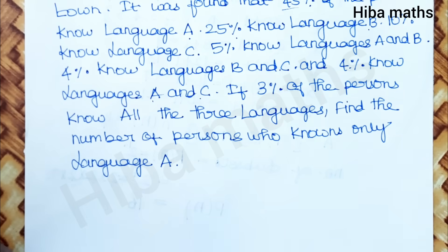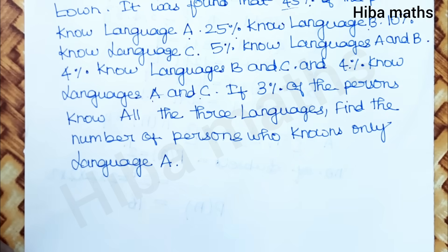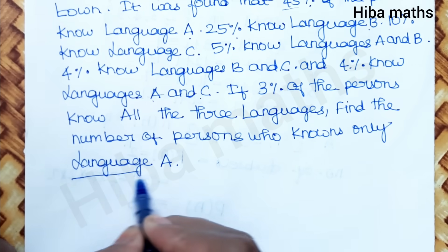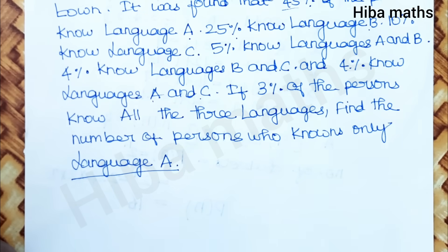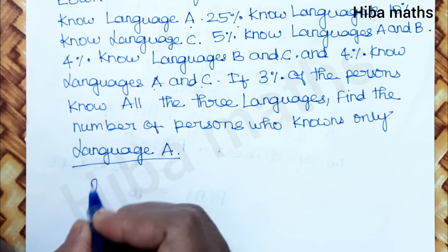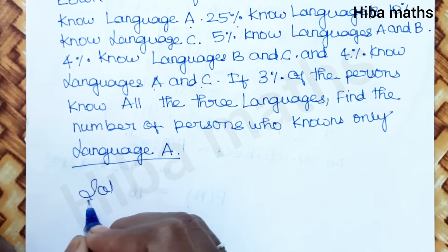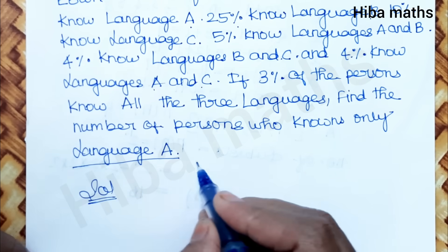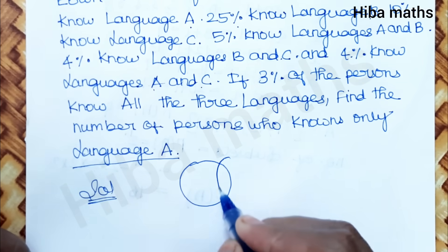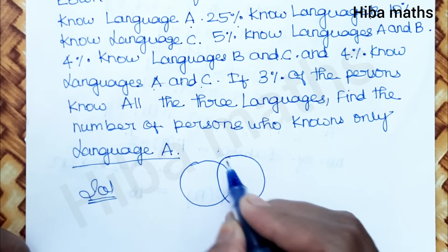Now we need to find the number of persons who know only language A. In the solution, we will use a Venn diagram. We need to refer to the 9th Standard concept from section 1.6.